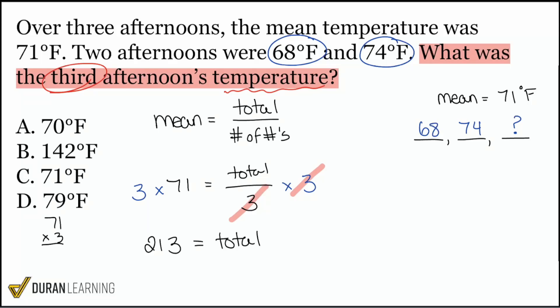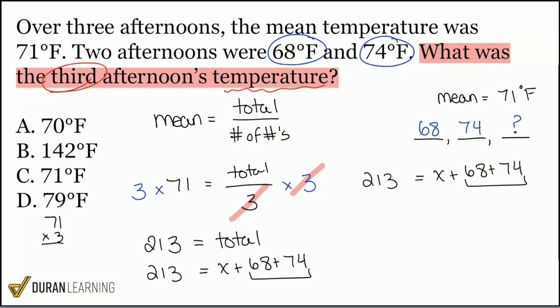So from here, my party people from here, we can now replace the total with what it actually is supposed to calculate. 68 plus 74 plus the missing number. Check it out here. We're going to have the missing number plus 68 plus 74. 142. Help me out my party people. What is 68 plus 74 going to be? 142. Absolutely. So we have 213 equals X plus 142.